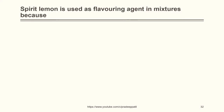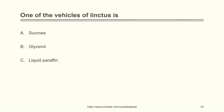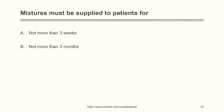Spirit lemon is used as a flavoring agent in mixtures because: it masks the taste of alkaline citrates, it masks the taste of acidic drugs, it masks bitter taste of drugs, or none of the above. The correct answer is it masks the taste of alkaline citrates. One of the vehicles used for lactose is: sucrose, glycerol, liquid paraffin, or propylene glycol. The correct answer is glycerol. Mixtures must be supplied to patients for not more than 3 days, because if they contain water they are prone to microbial contamination.